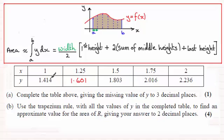OK, that would be this value here, plus twice the sum of all the middle heights, that would be twice the sum of these values, plus the last height, that would be that one there.